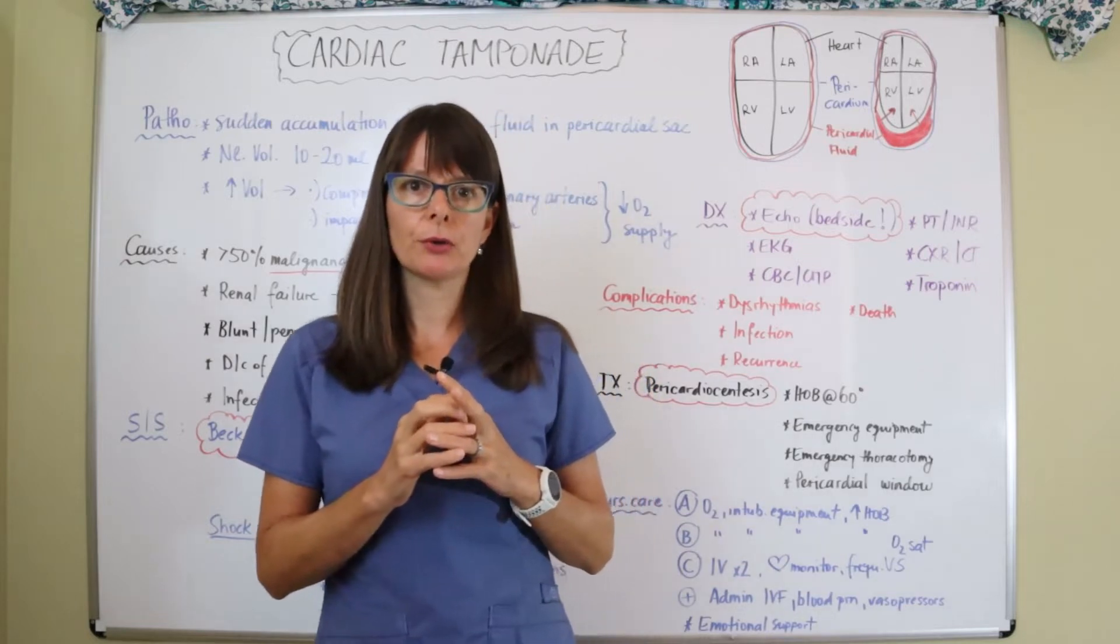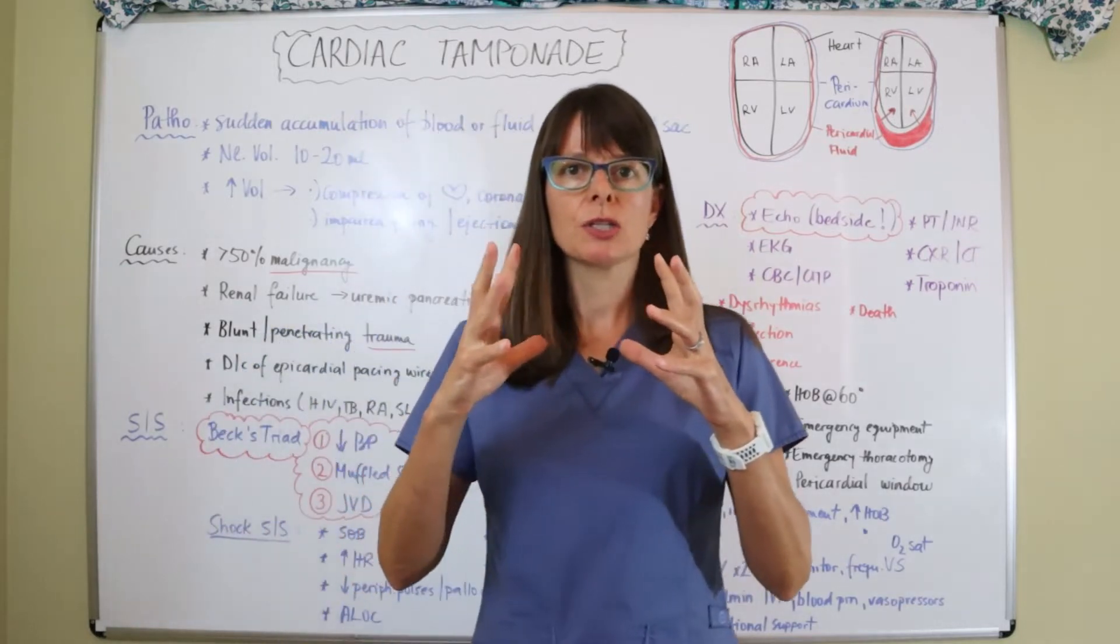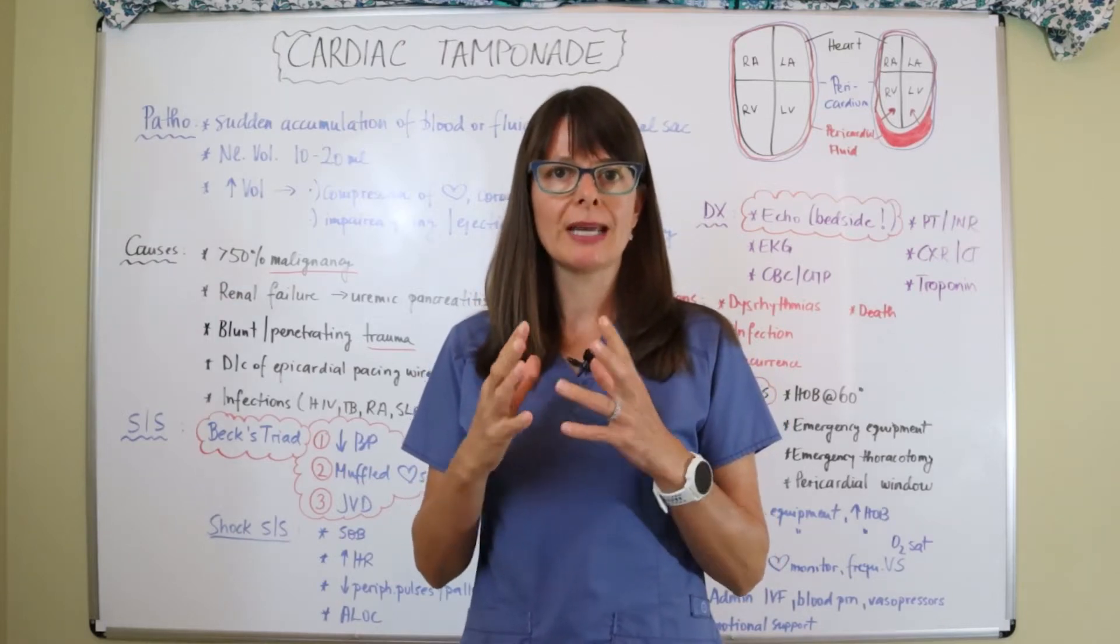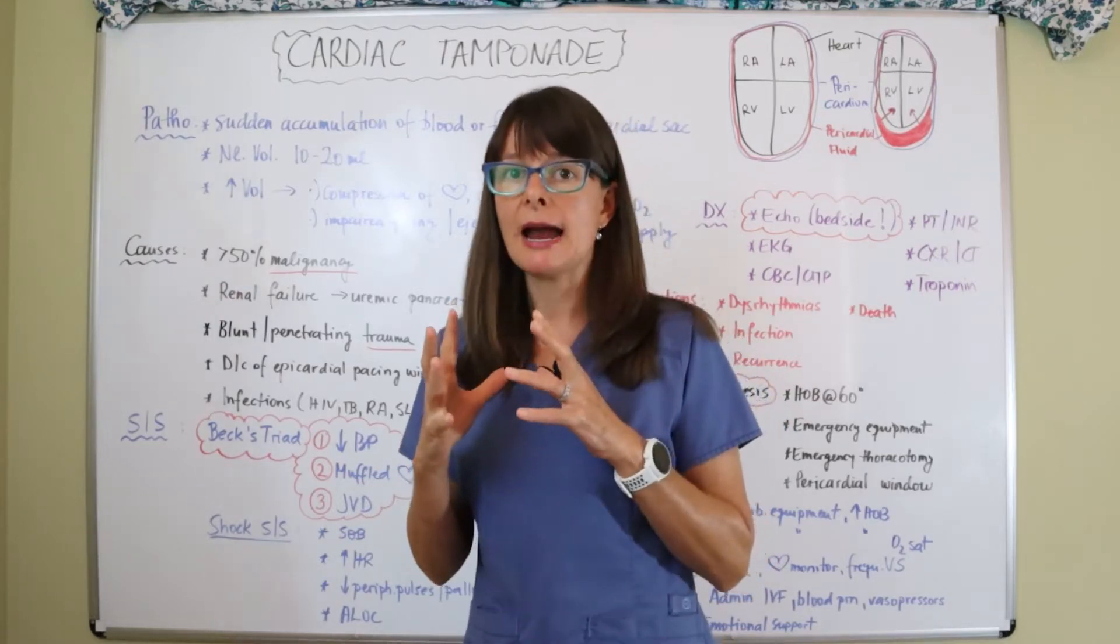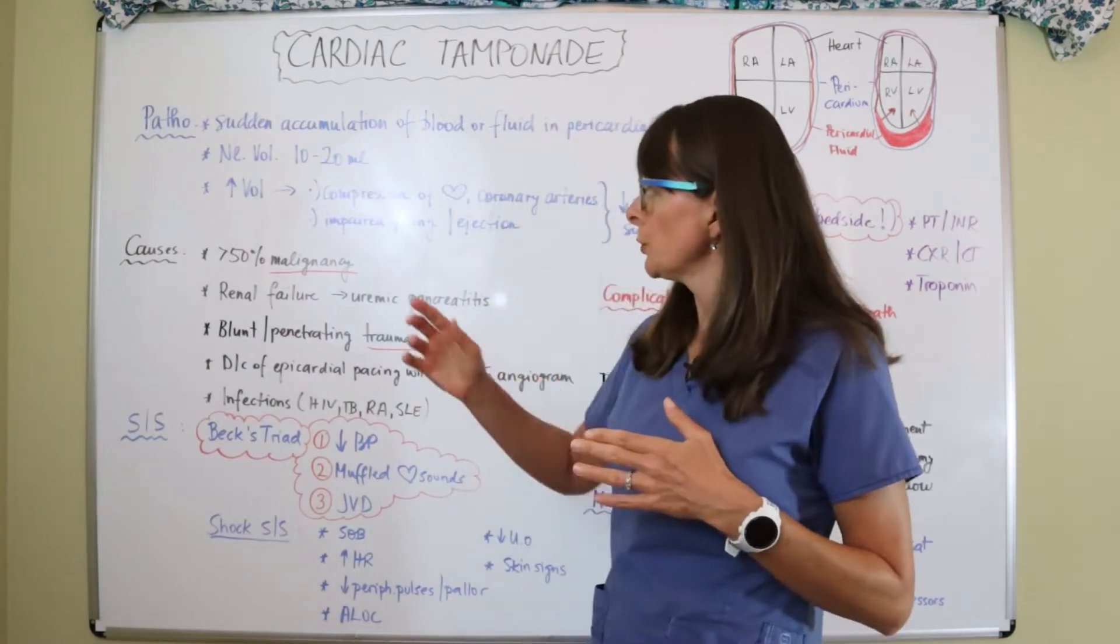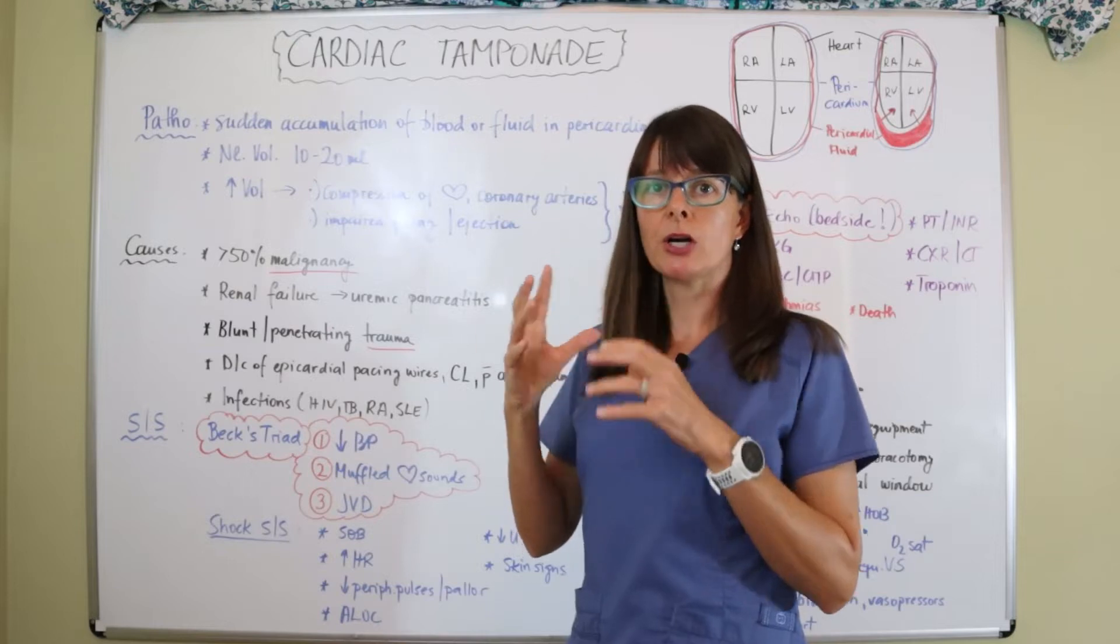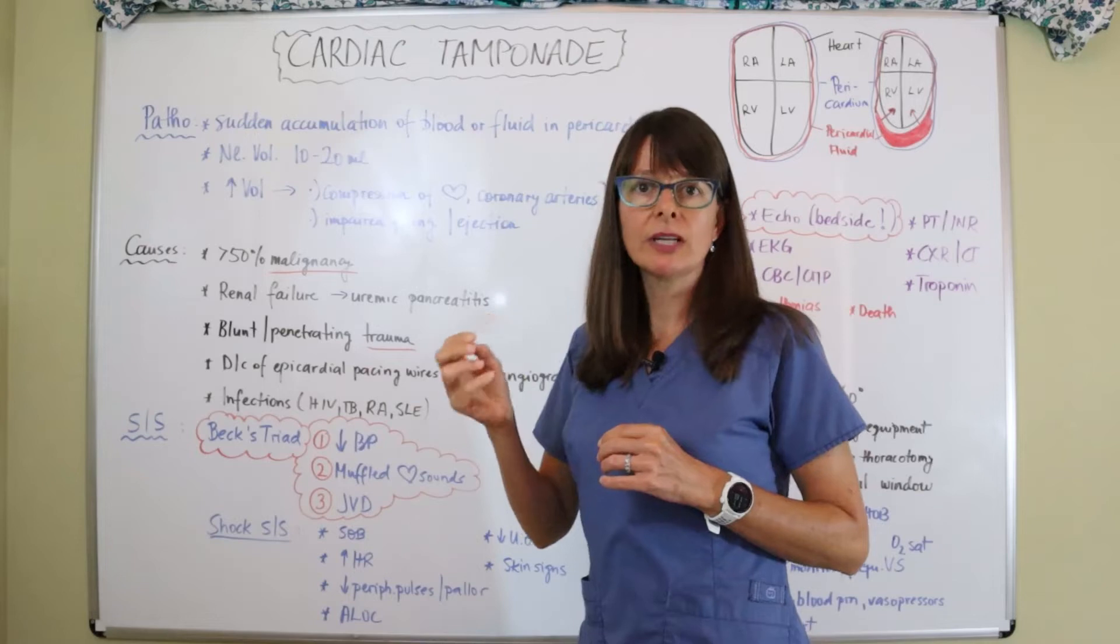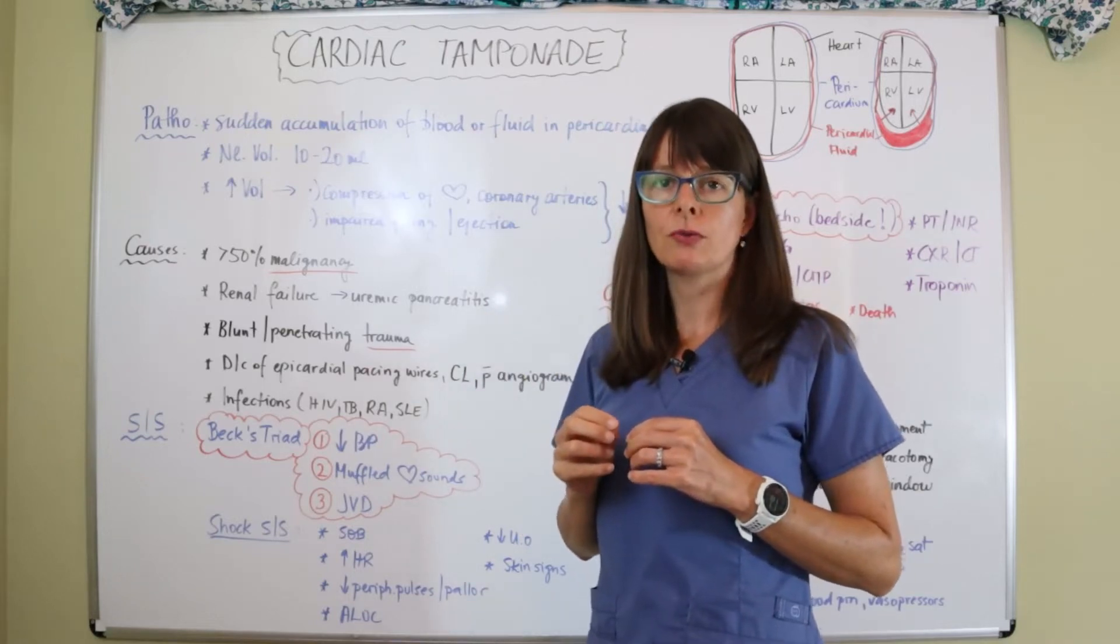A cardiac tamponade occurs when that fluid just becomes extra, so there's a sudden accumulation of this fluid in that pericardial sac, and that can be either blood or some kind of other fluid. Usually that volume in the pericardial sac is about 10 to 20 milliliters, so very small amount, and even a little bit amount of extra fluid can lead to some serious problems.